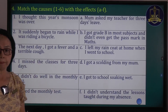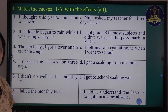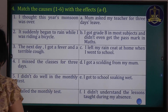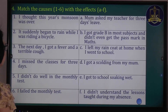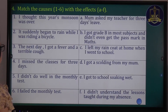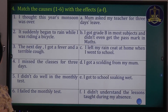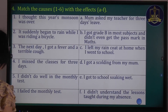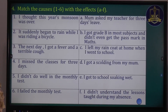Number 1: I thought this year's monsoon was over. Number 2: it suddenly began to rain while I was riding a bicycle. Number 3: the next day I got a fever and a terrible cough. Number 4: I missed the classes for 3 days. Number 5: I didn't do well in the monthly test. Number 6: I failed the monthly test.